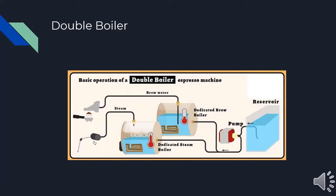In the figure below, the design of a double boiler is illustrated. From the reservoir, a pump moves water into the dedicated boilers for brewing and steaming. Each boiler then allows for independent temperature control, saving time on brewing and providing the user with a more consistent result each time. This setup allows for the user to steam milk and pull shots simultaneously.